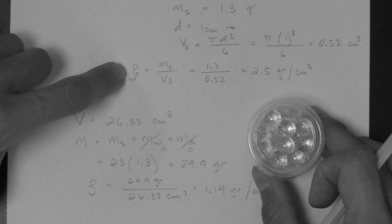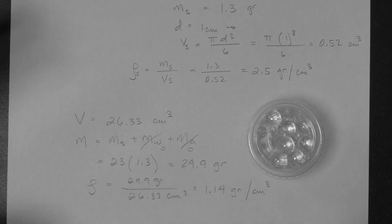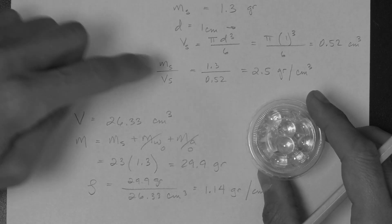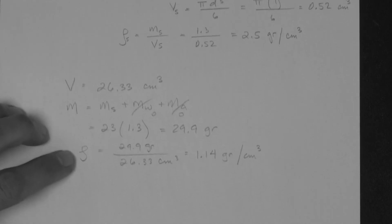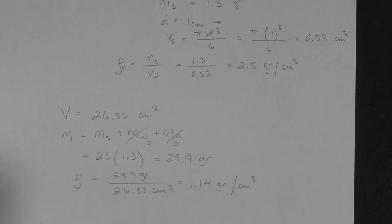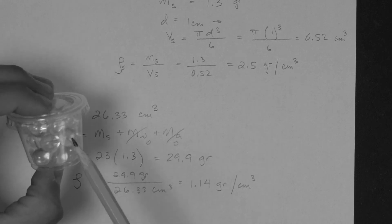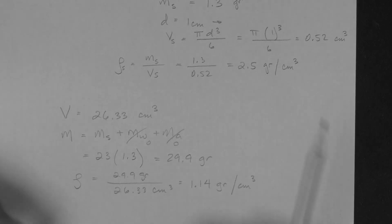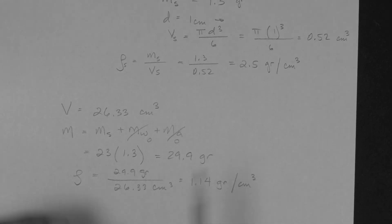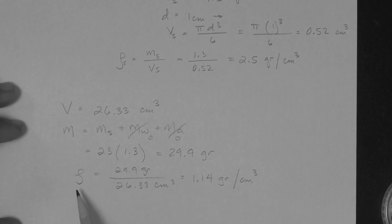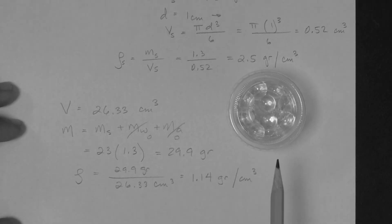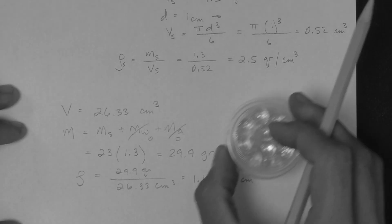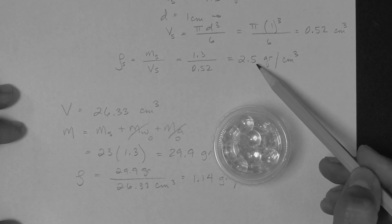Notice what happened: the mass density of solids is the density of the material that makes a grain, which is 2.5 grams per cubic centimeter. The mass density of the soil is lower — 1.14 — because part of the volume is occupied by air, which has no mass. Therefore, the density of a soil composed of particles is always lower than the mass density of the material that makes each of the particles.